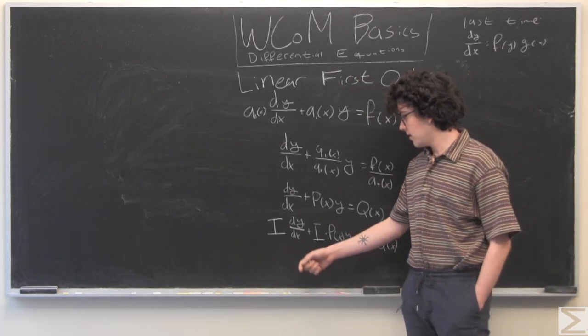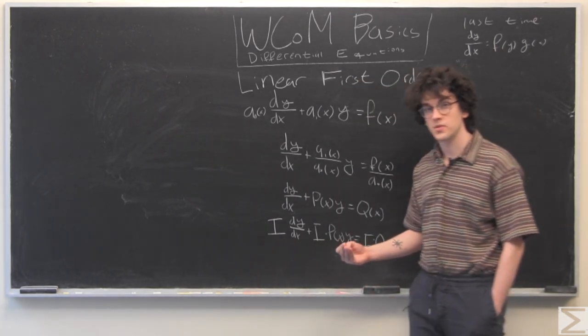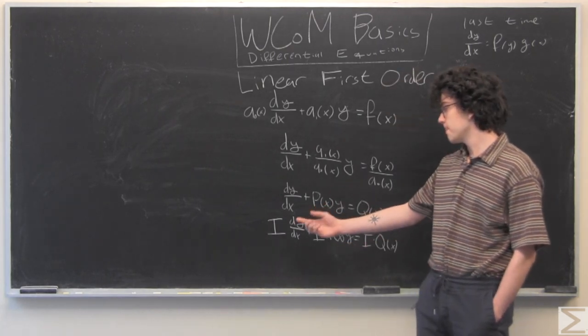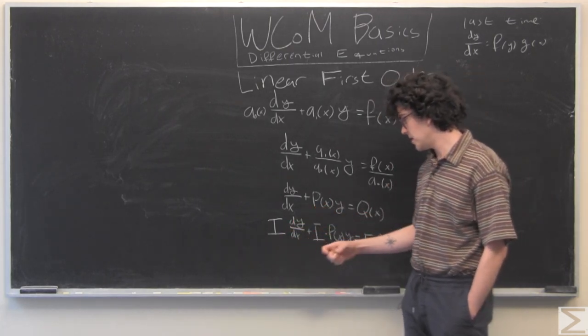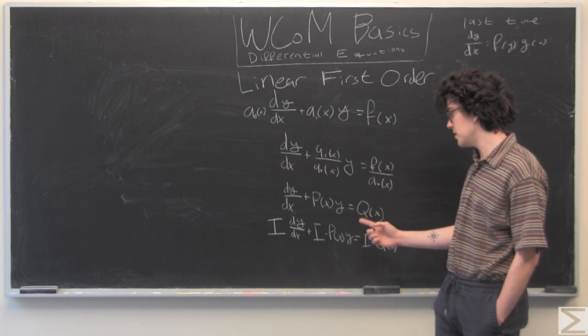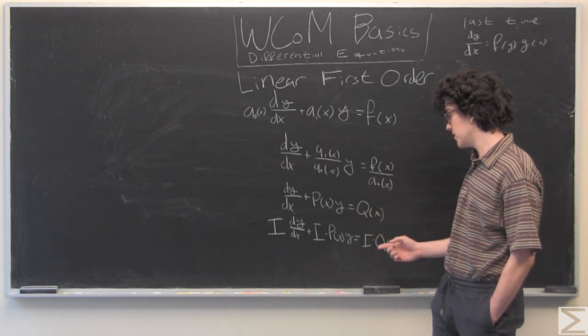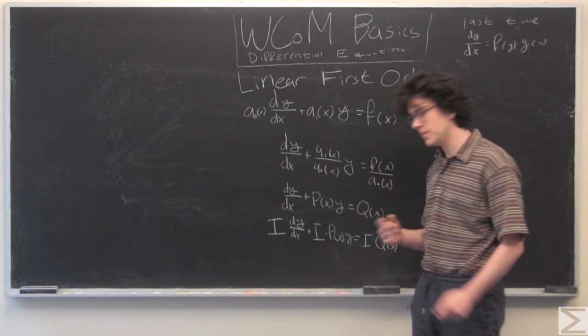So we have something times dy/dx, plus something times p(x)y, plus something times q.